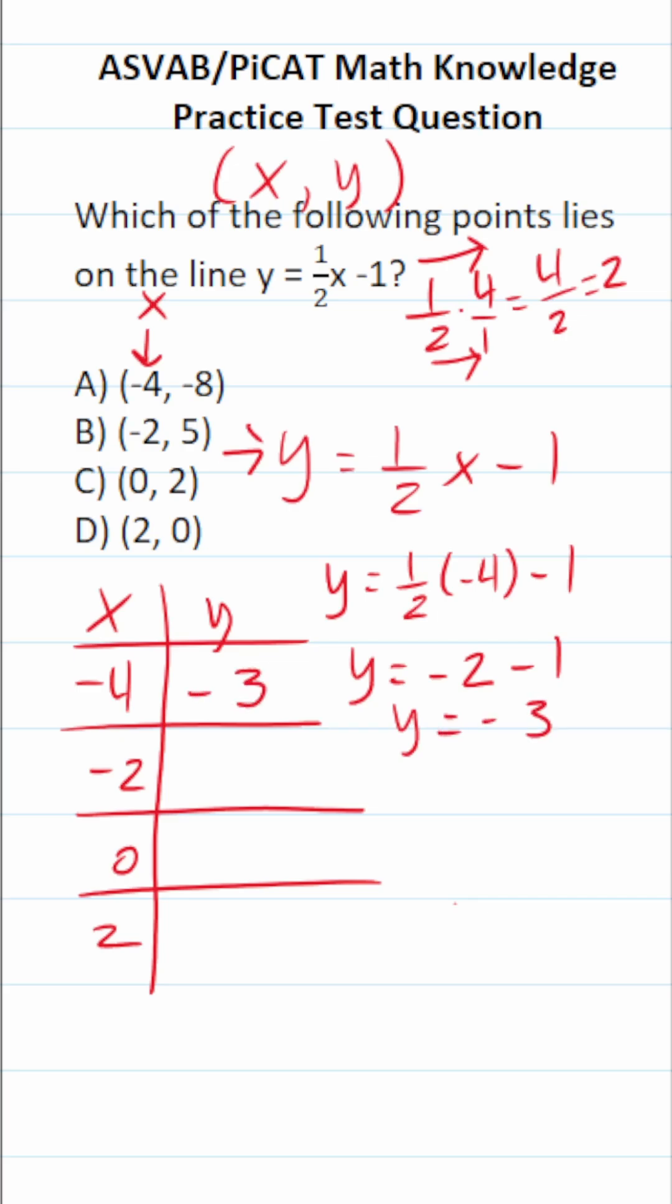Y equals negative 2 minus 1 is negative 3. So the point negative 4, negative 3 is on the line. Negative 4, negative 8 is not on the line.